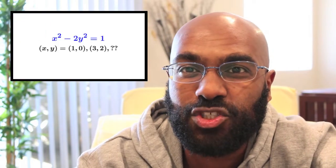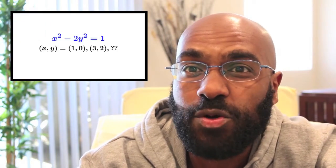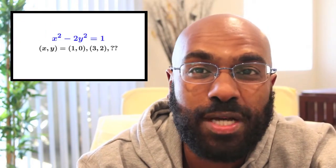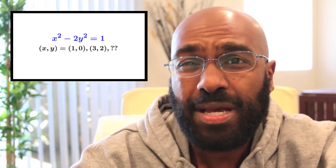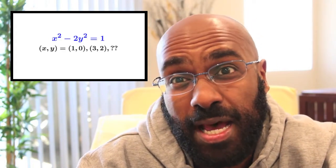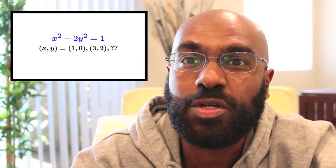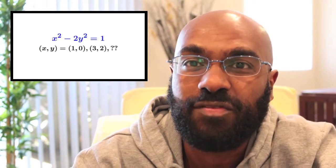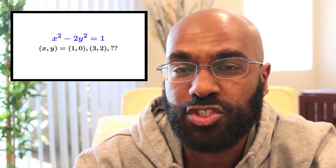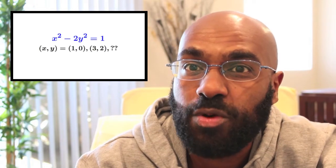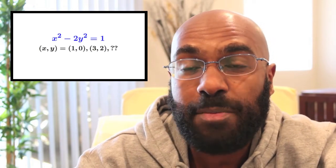Hey everyone, I have a fascinating video for you today. We're going to find infinitely many pairs of integers x and y that satisfy the equation x squared minus 2y squared equals 1. Now you might think this question looks kind of benign, but what we're going to do is turn this around and use it to find really close rational approximations to the square root of 2. That's going to happen toward the end of the video, but you have to watch the whole video to get a sense of what the build-up is and where everything is coming from.